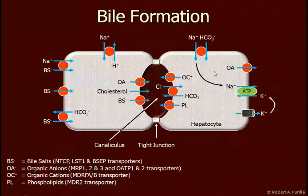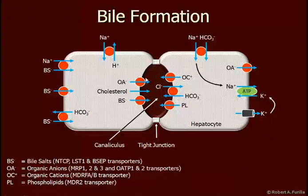Over here, we see a sodium bicarbonate transporter. Then there's the sodium-potassium pump with a potassium channel. Organic anions can leave the cell, or they can enter the canaliculus. Organic cations can also enter the canaliculus. Chloride can be exchanged for bicarbonate to create an alkaline environment. Phospholipids also move into this canaliculus. Bile salts and cholesterol all move into the canaliculus. Bile salts are brought in either with a sodium co-transporter, bicarbonate exchanger, or on a facilitated transport mechanism.